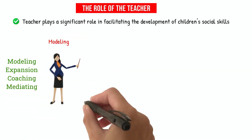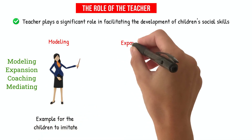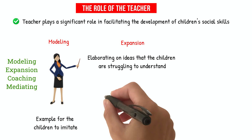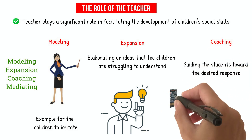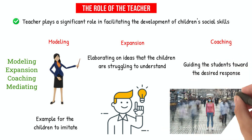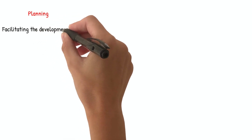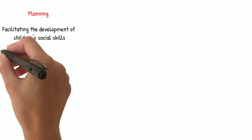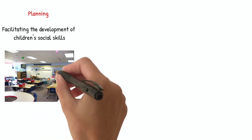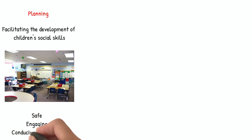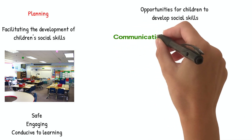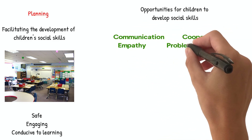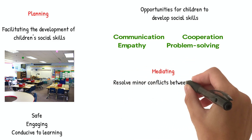Modeling involves the teacher setting an example for the children to imitate, while expansion entails the teacher elaborating on ideas that the children are struggling to understand. Coaching involves guiding the students toward the desired response — for example, giving children information about how their actions affect others. Planning is also an essential role that teachers play. Effective planning involves creating a learning environment that is safe, engaging, and conducive to learning, with activities that develop social skills such as communication, cooperation, empathy, and problem-solving. Mediating involves helping to resolve minor conflicts between the children.